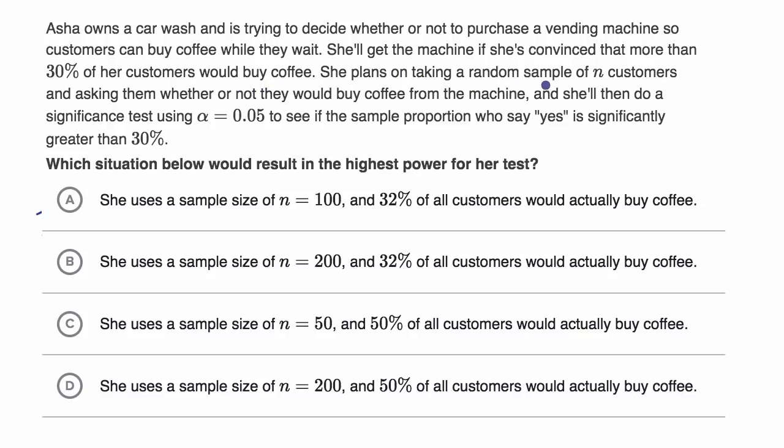She'll get the machine if she's convinced that more than 30% of her customers would buy coffee. She plans on taking a random sample of n customers and asking them whether or not they would buy coffee from the machine. And she'll then do a significance test using alpha equals 0.05 to see if the sample proportion who say yes is significantly greater than 30%.